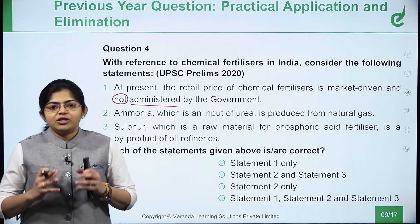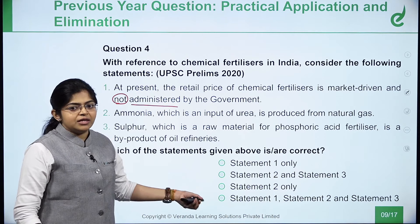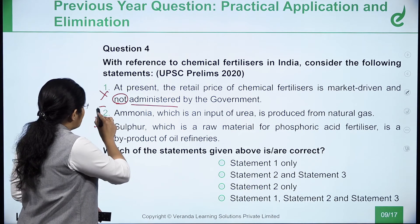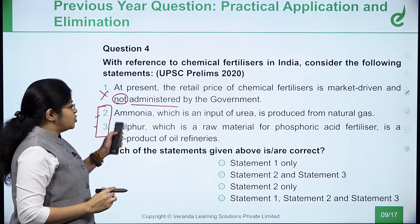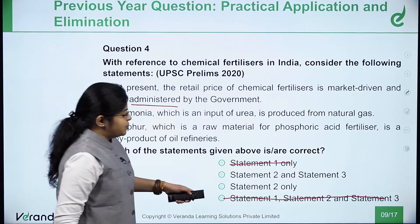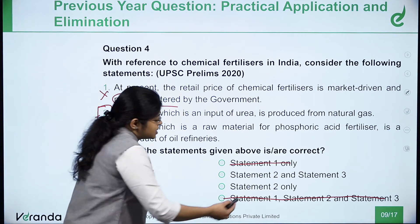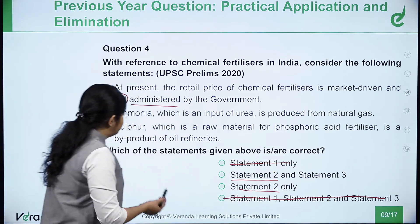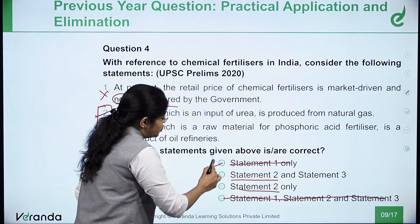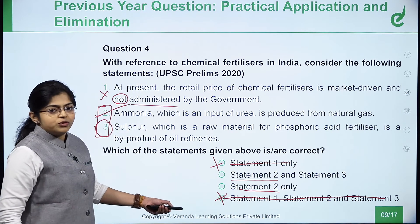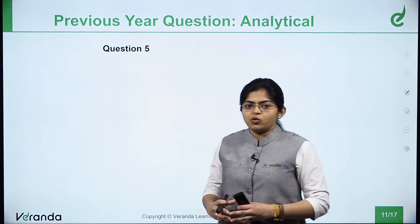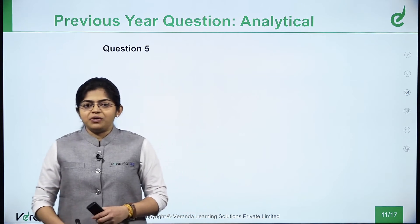Using the elimination technique: if you know statement two is correct but are unsure about statement three, you have already eliminated two options, leaving only the remaining two. So you are already halfway to the answer. Similarly, there are many such techniques — try to explore the UPSC question paper and find tricks and techniques through your own experience.